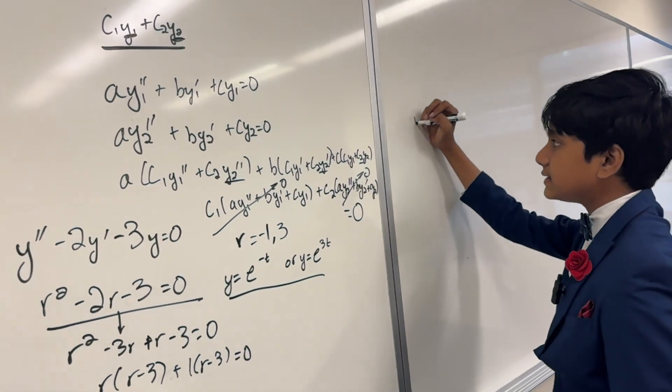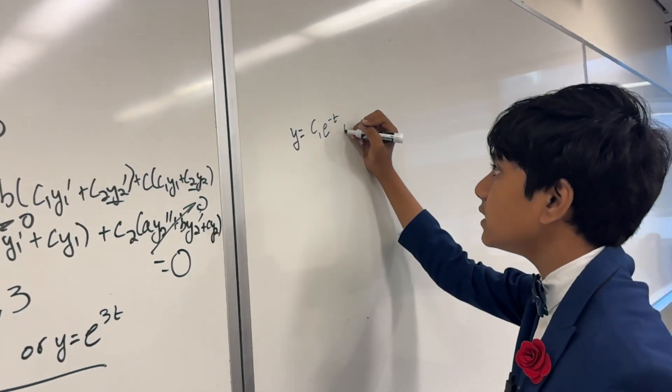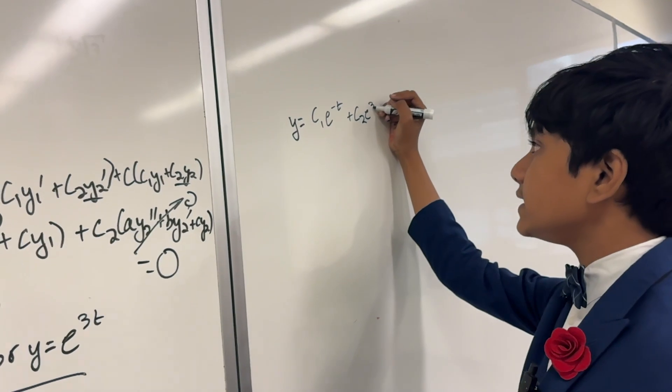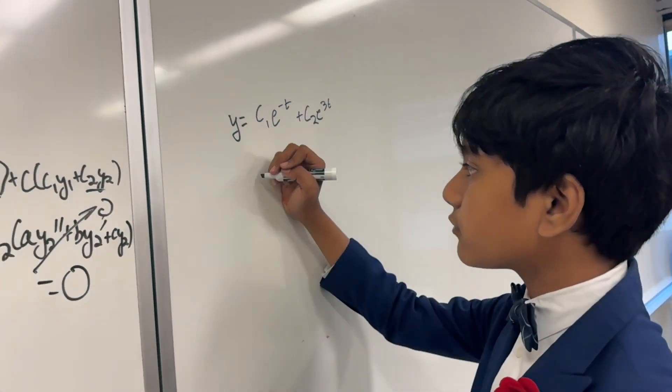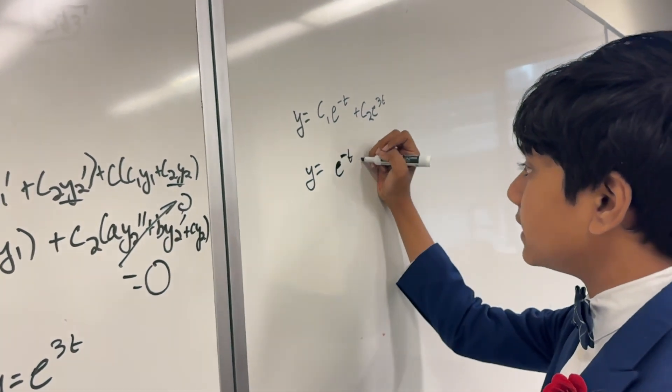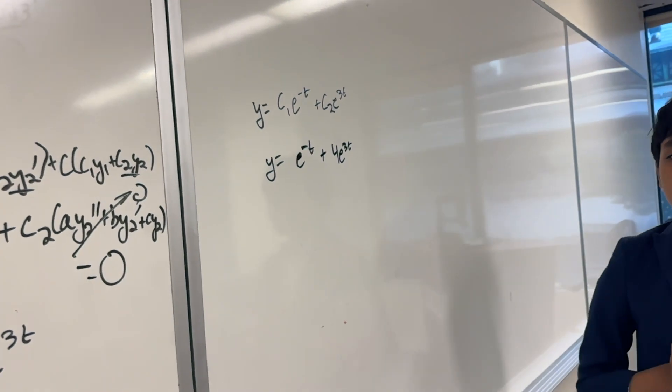So we can be ensured that the general solution y is equal to c1 e to the minus x, plus c2 e to the 3x, will actually satisfy this equation. You can go check for yourself, for example, that e to the minus x plus 4 e to the 3x will work. So now, let's get into some more complicated things.